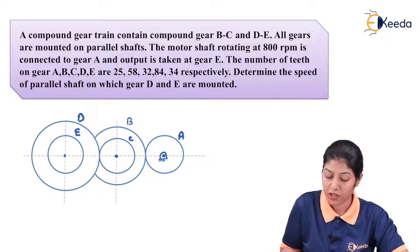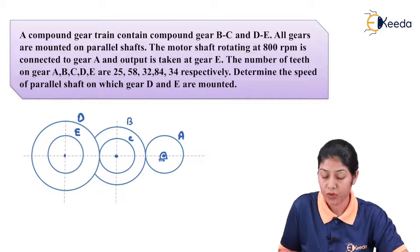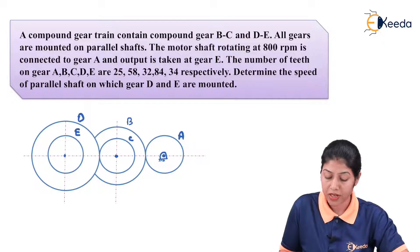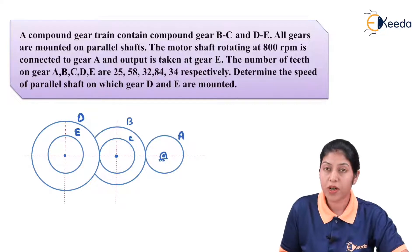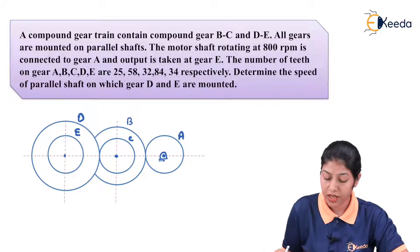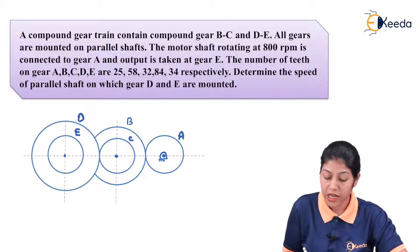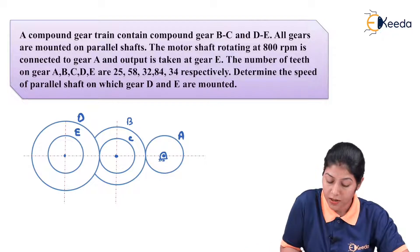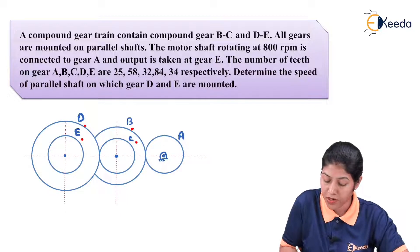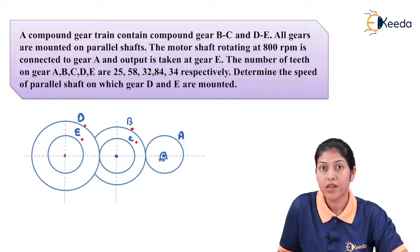Determine the speed of the parallel shaft on which gear D and E are mounted. As per the numerical we have a diagram of the compound gear train where a number of gears are involved for the transmission of power from the driving gear to the driven gear with the help of compound gears. We have two compound gears: gear B and gear C, and gear D and gear E, which are getting motion from gear A. Gear A is the driving gear.